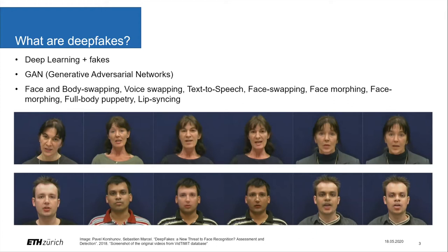As I said already, deepfakes use powerful AI and machine learning technology to create video and audio content. Very often the intention, or at least the effect, of these deepfake videos is to deceive the viewer and manipulate what we are seeing. There are many different ways to make a deepfake video, but in general you feed footage and photos to an AI algorithm called an encoder, which then finds similarities and reduces the photos and footage to common features.